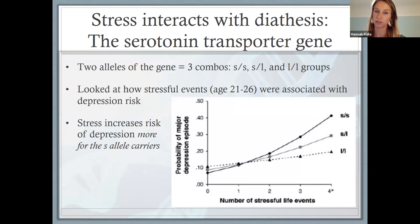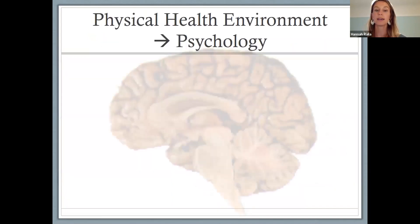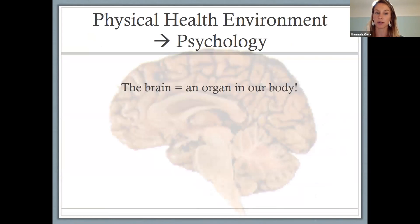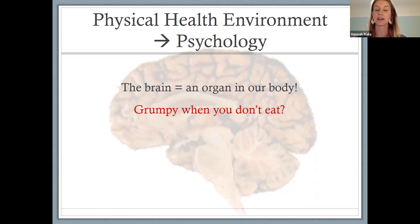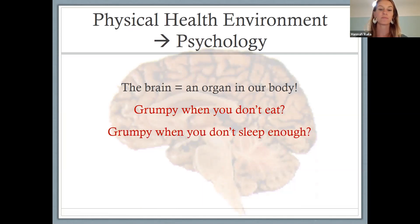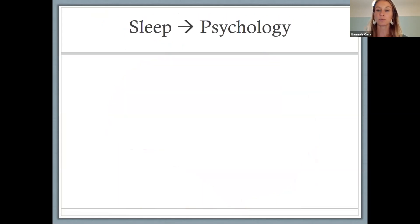Another way to think about how environment influences our mental health is thinking about how our physical health environment can influence our psychology. It's important to remember that the brain is an organ in our body, just like our heart and lungs. That explains why a lot of us get grumpy when we don't eat, or aren't able to regulate our emotions as well when we don't sleep enough. We'll look at a couple of mechanisms of how this might work.